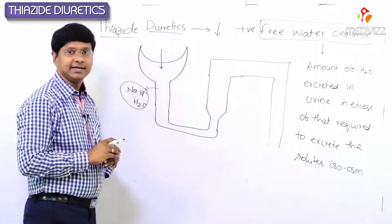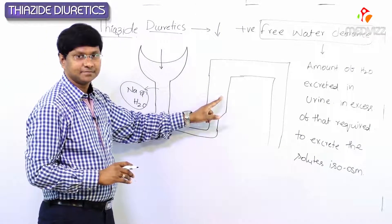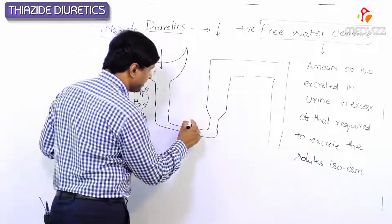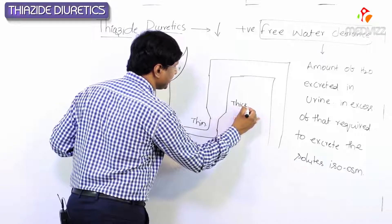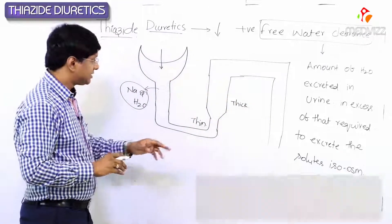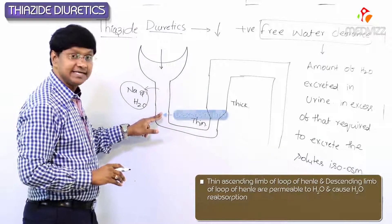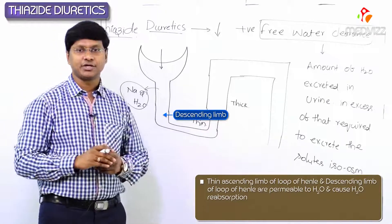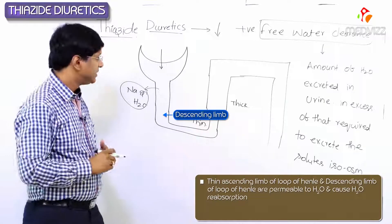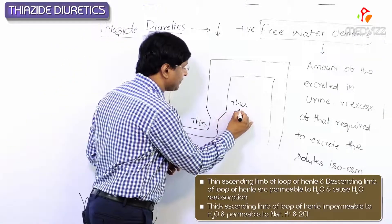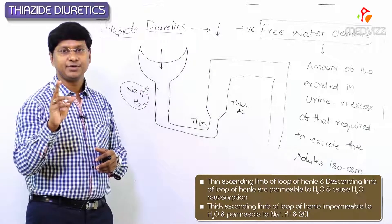At the level of the ascending limb of the loop of Henle, we have the thin ascending limb and the thick ascending limb. The thin ascending limb and the descending limb of the loop of Henle are permeable to water, so they cause water reabsorption.